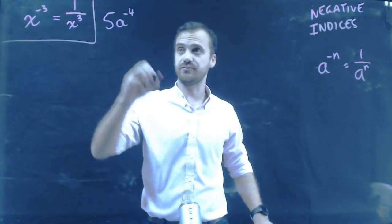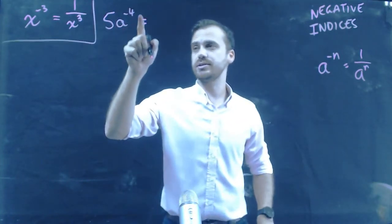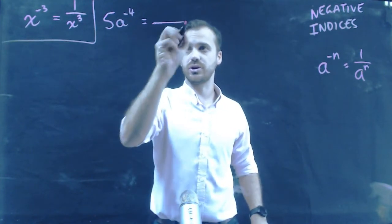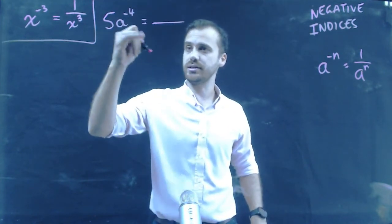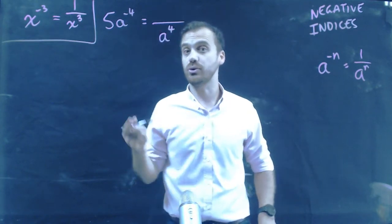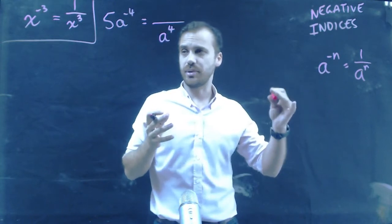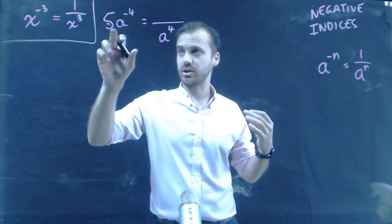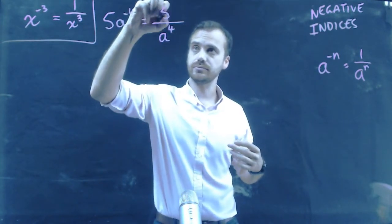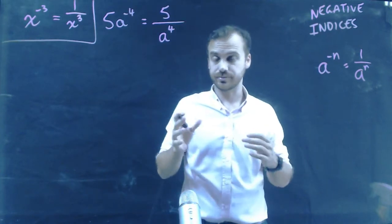5a to the negative 4. Now, that a to the negative 4 is on the wrong side. So, a to the negative 4 is going to come to the bottom and become a to the 4. The 5, well, the 5 isn't raised to a negative power. The 5 is just 5. 5 times a to the negative 4. So, 5 can go on the top. Easy.